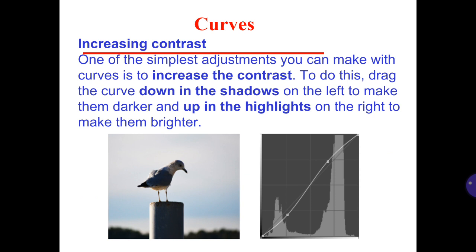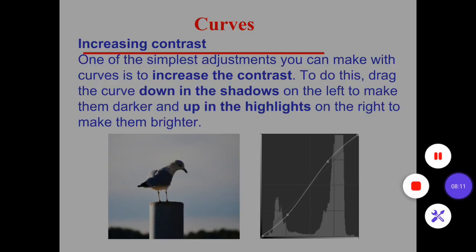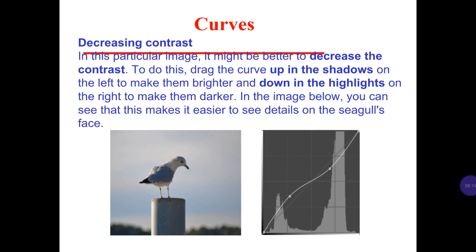Increasing contrast: One of the simplest adjustments you can make with curves is to increase the contrast. To do this, drag the curve down in the shadows on the left to make them darker and up in the highlights on the right to make them brighter. In this particular image, it might be better to decrease the contrast. To do this, drag the curve up in the shadows on the left to make them brighter and down in the highlights on the right to make them darker. In the image below, you can see that this makes it easier to see details on the squirrel's face.